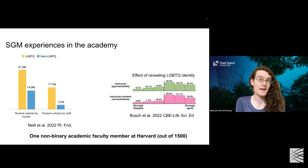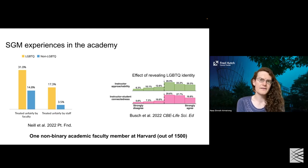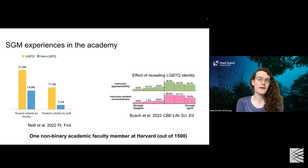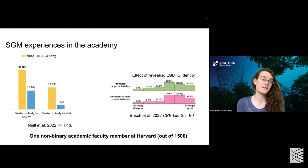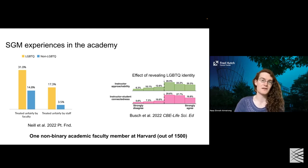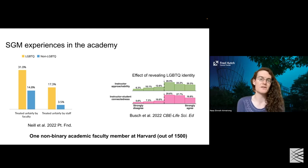It's also important to note that there just aren't that many sexual and gender minority identified individuals in the academy. This is hard to quantify because people usually don't record a lot of information on this, but I did find a survey at Harvard from this most recent year. They surveyed faculty members, and there was one individual who identified as non-binary out of 1,500 faculty. As a result of that limited representation, it's hard to achieve equity and support in the ways that would be ideal.